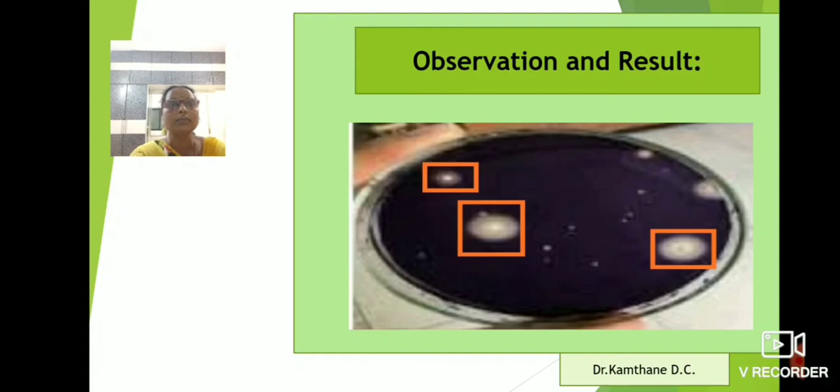This is the observation and result that is the organisms which are able to produce amylase enzyme. These are showing the zone of clearance around themselves while rest of the agar appears violet in color.